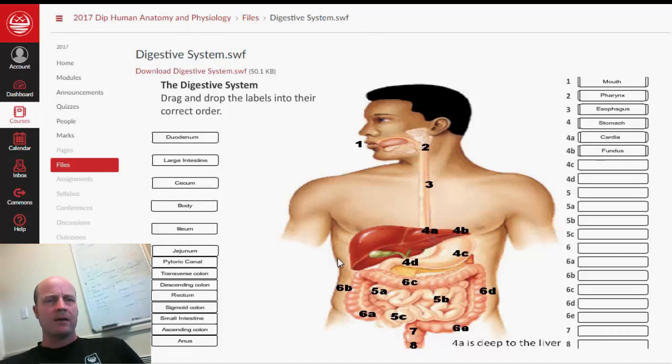And then the main chunk of the stomach is called the body. And then when the stomach gets narrow through here, that is the pyloric canal.